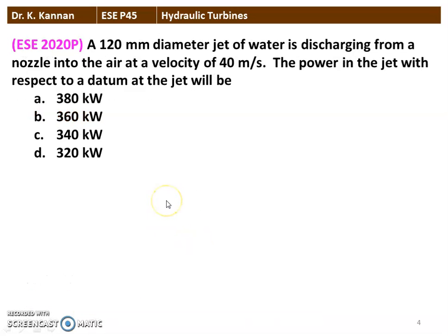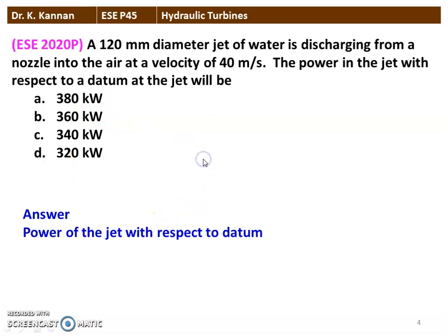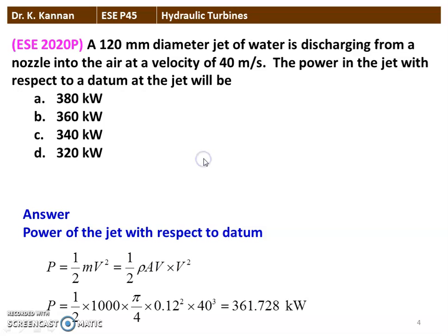The next question from the 2020 question paper: a 120 millimeter diameter jet of water is discharging from a nozzle into air at a velocity of 40 meters per second. The power in the jet with respect to the datum at the jet will be — we have four options here. We calculate the power of the jet with respect to the datum.